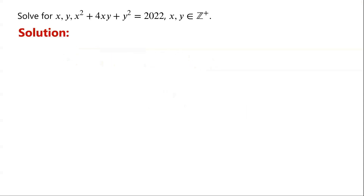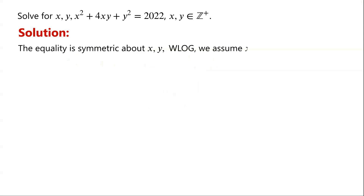This is a Diophantine equation. The equality is symmetric about x and y, so without loss of generality, we assume that x is less than or equal to y. We let y equal x plus n, where n is a non-negative integer. Substitute y equal x plus n in the equation.